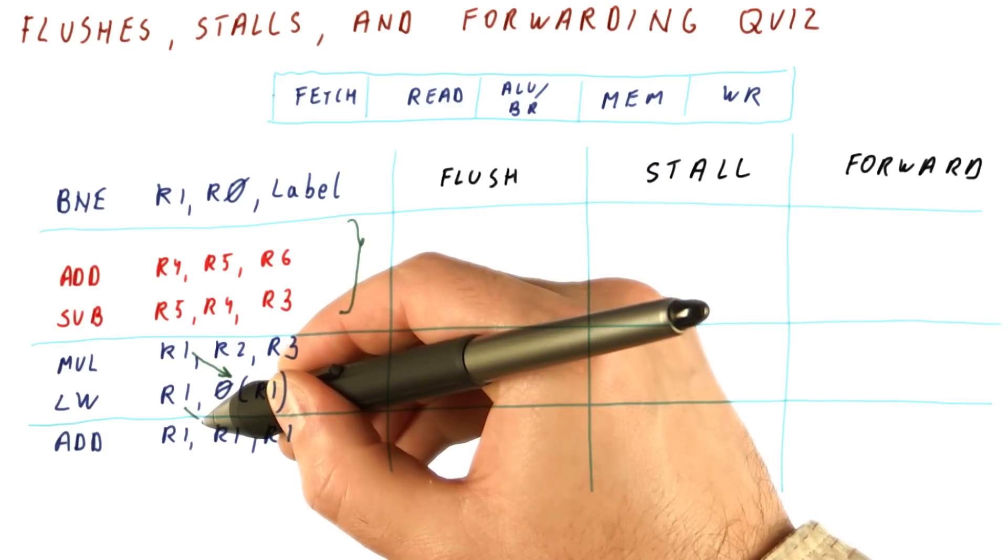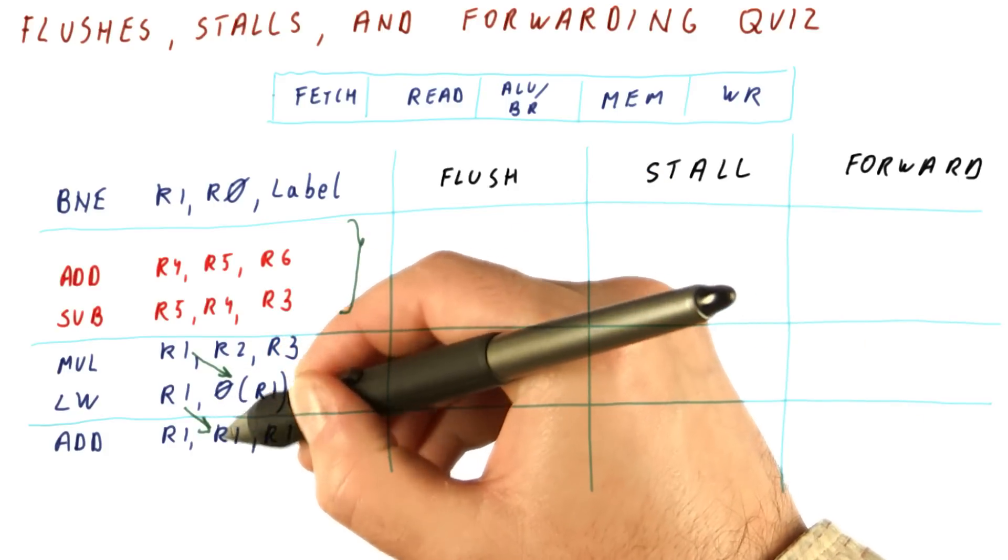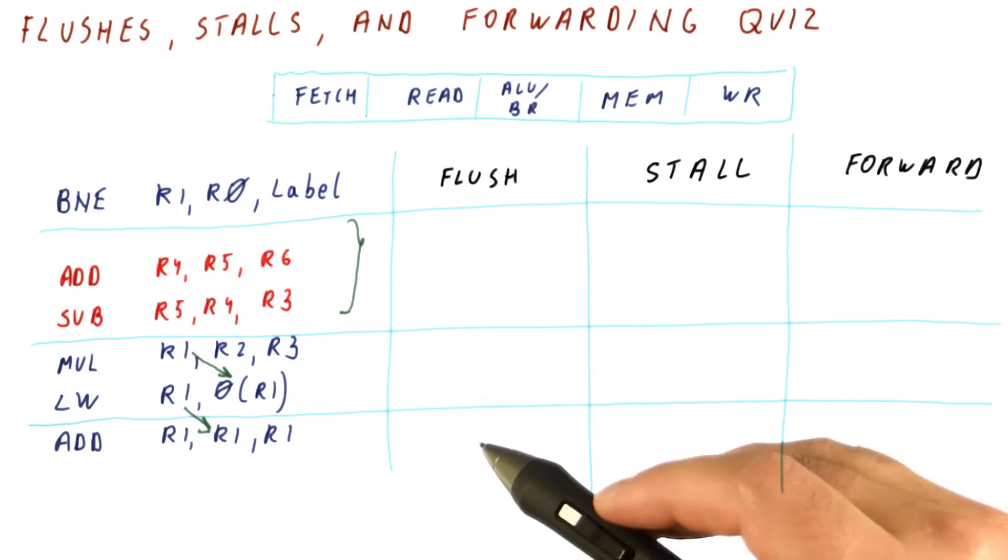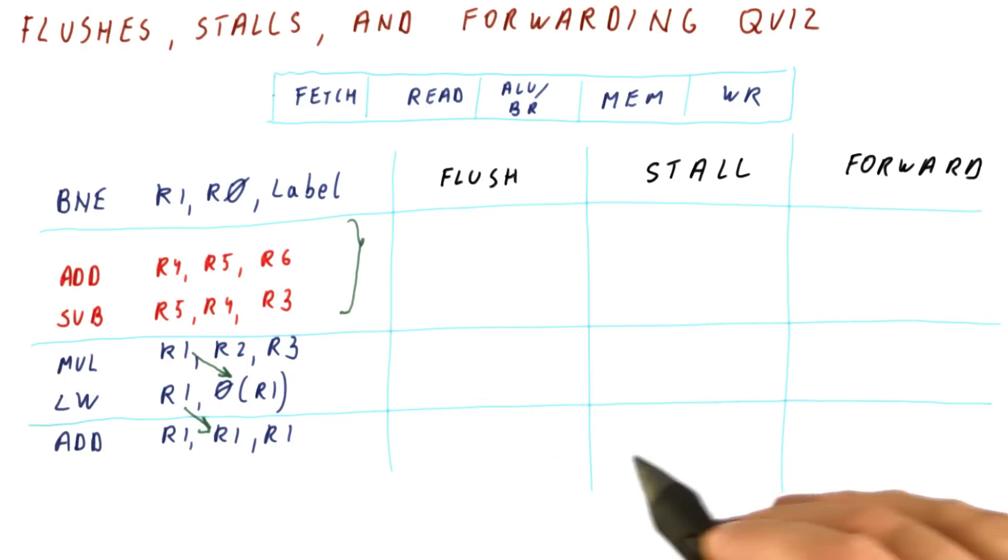And finally, the load is producing the value of R1 that this add needs to use. So the question for you is, should we flush, stall, or forward in this case?